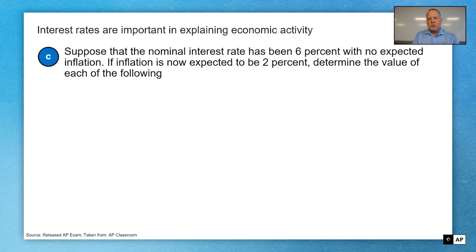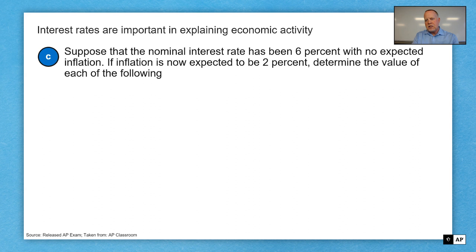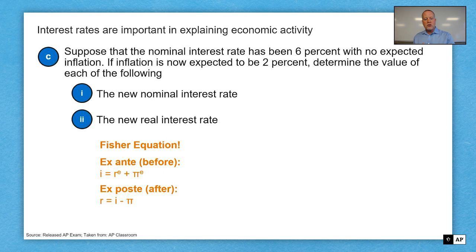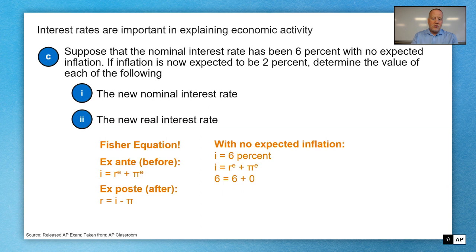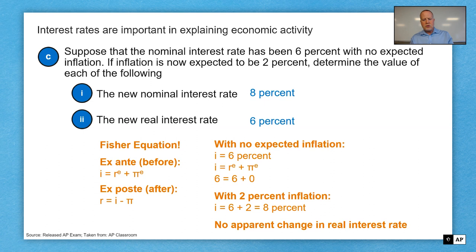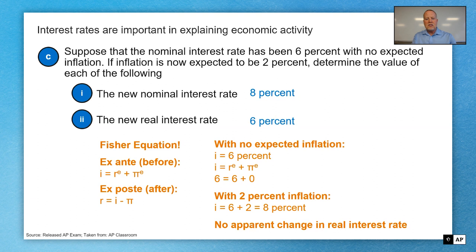On to part C. Suppose the nominal interest rate has been 6% with no expected inflation. If inflation is now expected to be 2%, determine the value of the new nominal interest rate and the new real interest rate. As soon as they mention inflation and nominal interest rates, this is a Fisher equation question. With no expected inflation, our nominal rate is 6%. With 2% expected inflation, it's now up to 8%. So the new nominal interest rate is 8%. For the new real interest rate, nothing has happened to cause a change — the correct answer is 6%. Use your Fisher equation, understand the Fisher effect, and know nothing has happened to cause a change in the real interest rate.